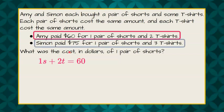Now we have Simon, and Simon spent $75, and he bought one pair of shorts, three t-shirts, and it equaled $75.